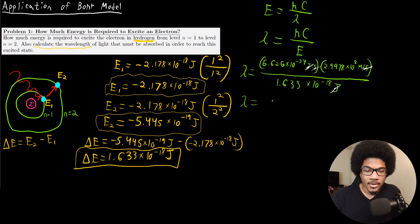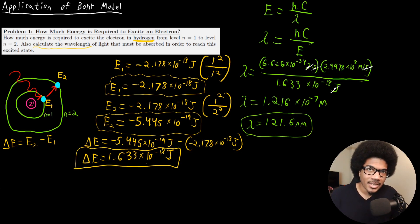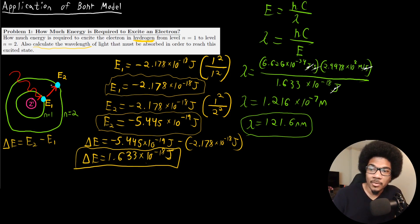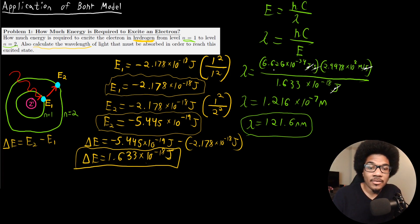This gives a final answer of 1.216 times 10 to the negative 7 meters. In nanometers, that is 121.6 nanometers — firmly in the UV region of light. So we've introduced what an electronic excitation physically is, calculated the energy necessary to cause this excitation, and used the energy of a photon to calculate the wavelength of light that would be necessary to cause this excitation.